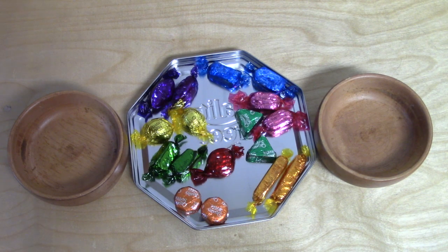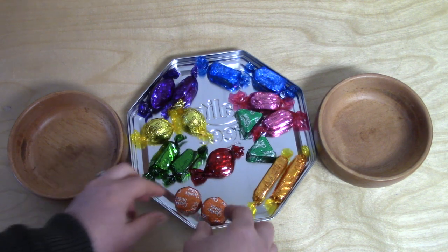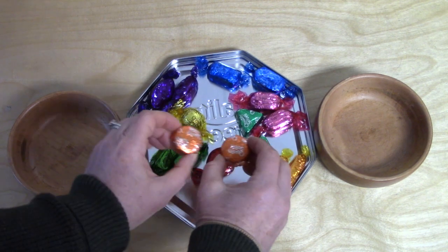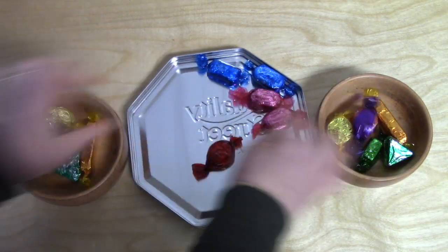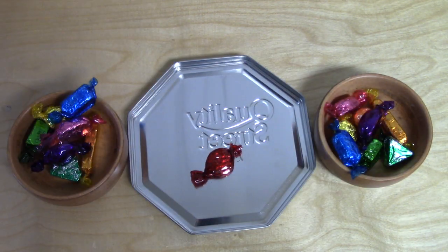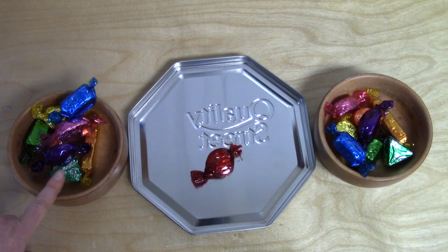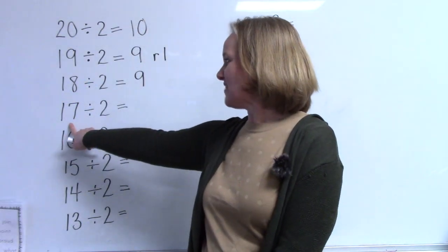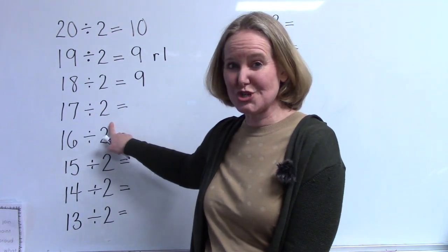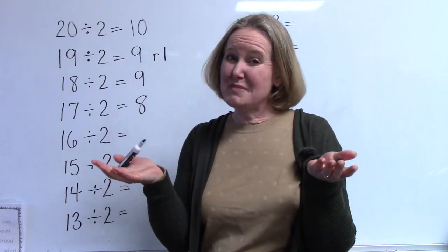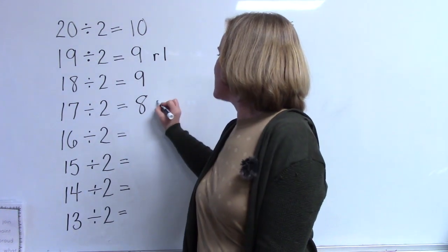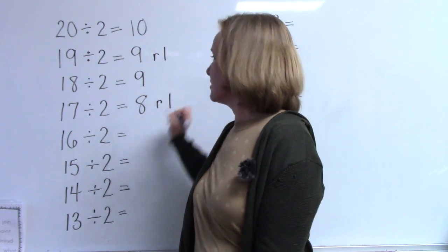Now I have seventeen candies and I would love for you to try dividing seventeen objects as well. One, two, three, four, five, six, seven, eight. The number seventeen, when divided into two groups or divided by two, is eight with one left over. We just divided seventeen candies into two different bowls and we were able to have eight in each bowl but there was one candy left, so that's eight with a remainder of one.